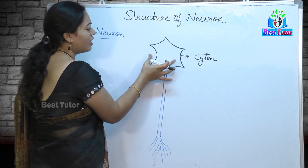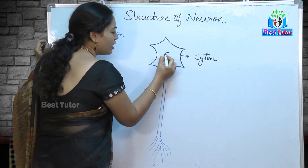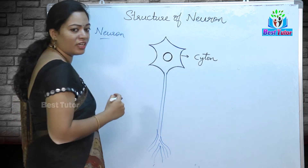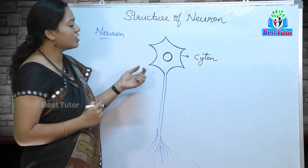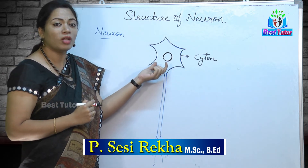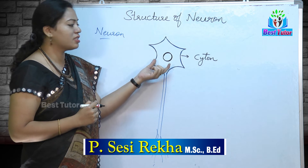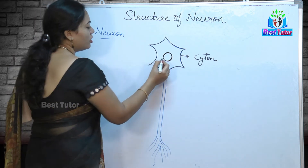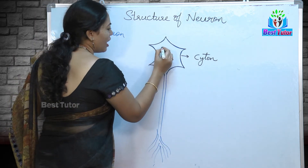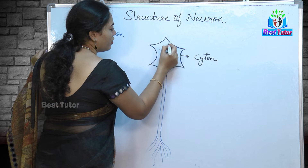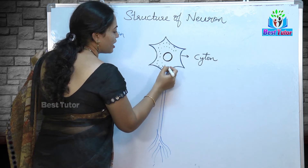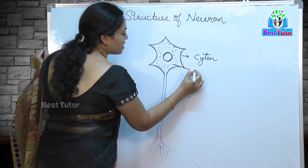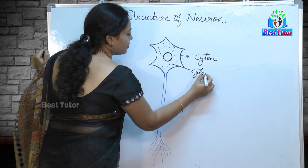This cell has a nucleus inside it. The nucleus is the one which is going to regulate all the activities inside the cell. The nucleus is there and we also have cytoplasm inside the cell body.